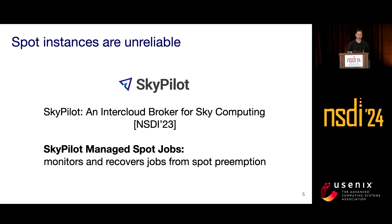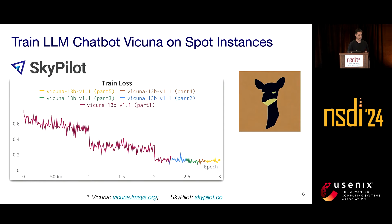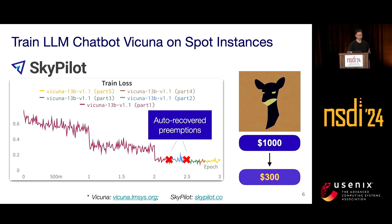In our previous NSDI paper, SkyPilot, we built an inter-cloud broker system which enables users to use spot instances and handle such preemptions automatically. Let's take a look at a real example where we trained a Vicuna LLM chatbot on SkyPilot managed spot. On the left-hand side is the training curve of the model, and we can see five different colors in the curve — each represents a different spot instance. SkyPilot automatically detected the four preemptions and recovered the job on different spot instances, reducing training cost from $1,000 to $300.